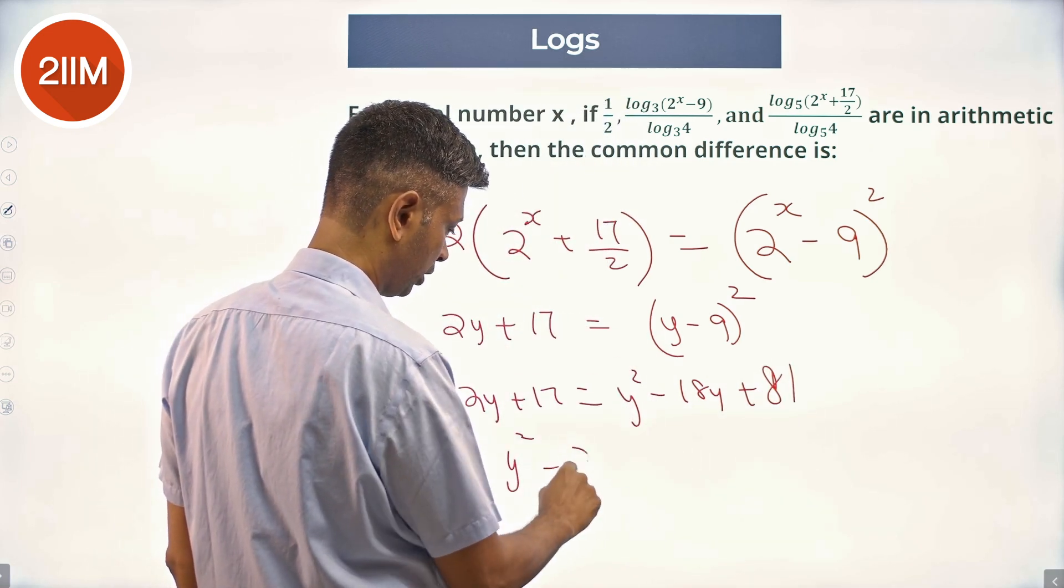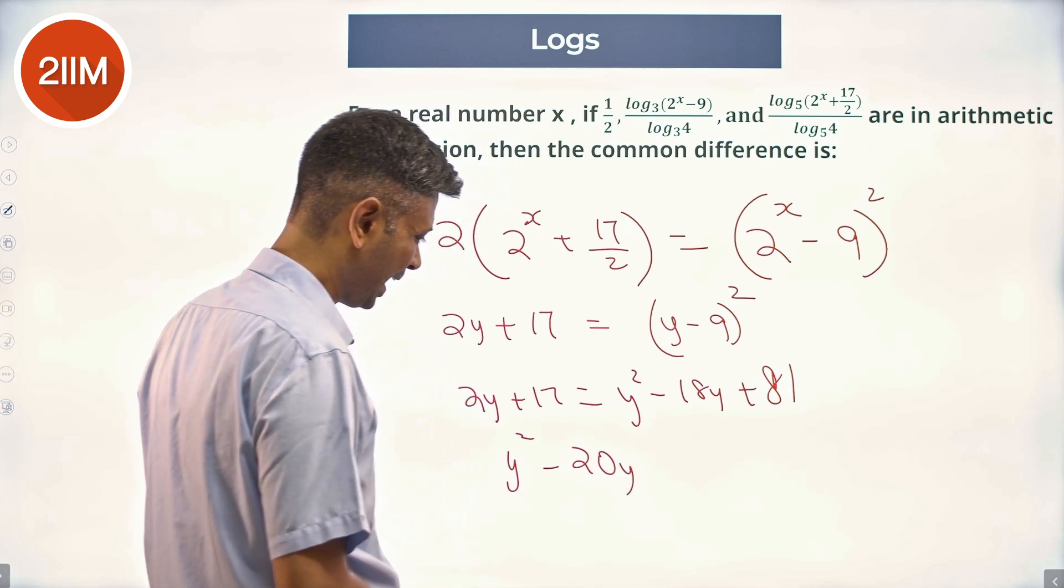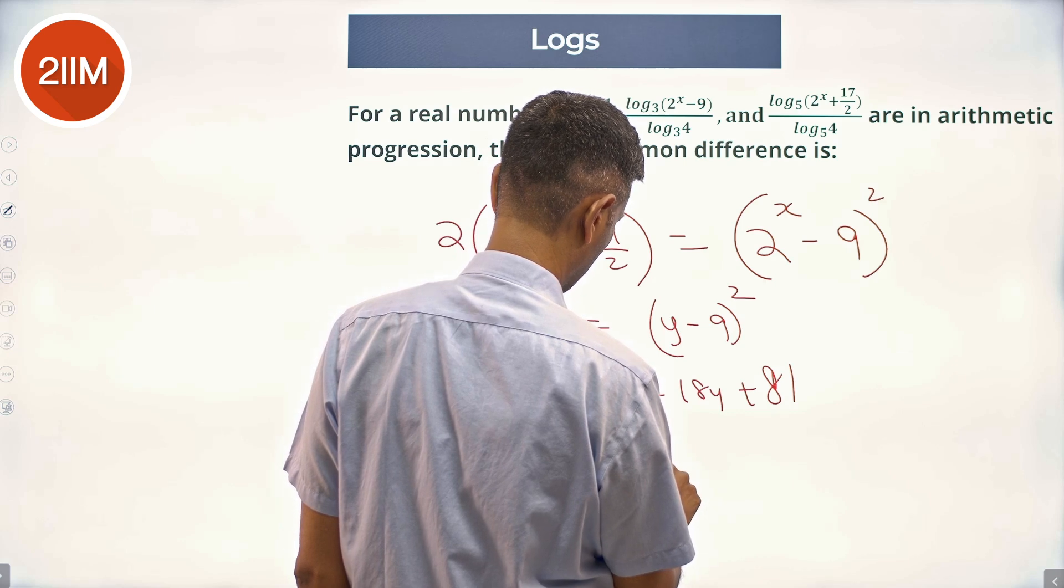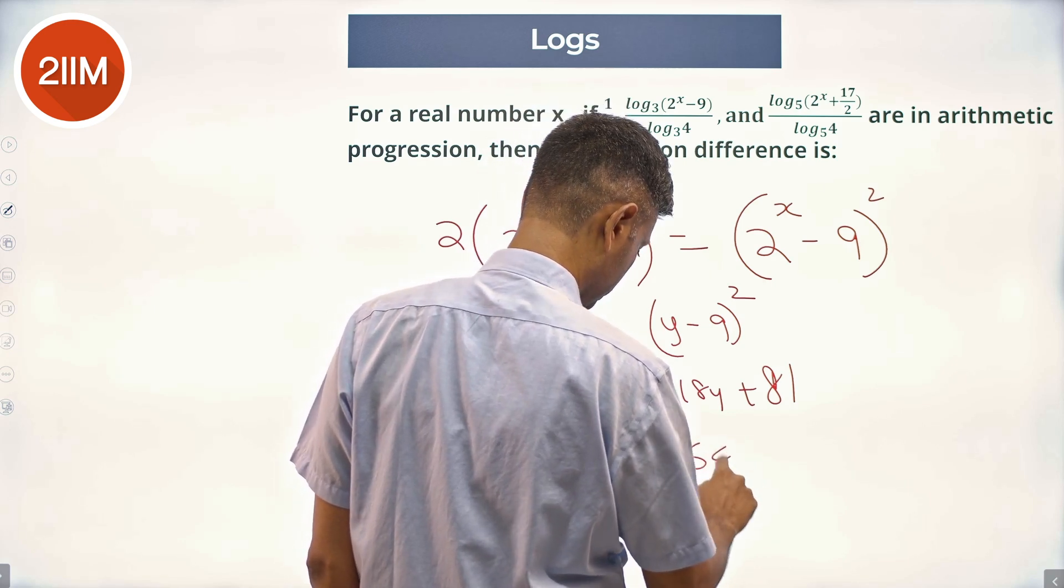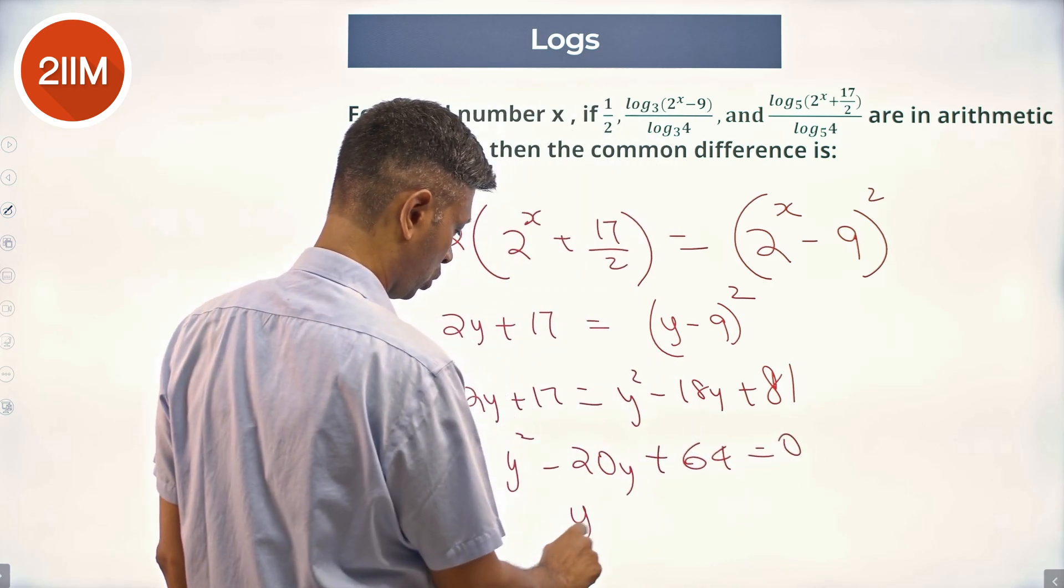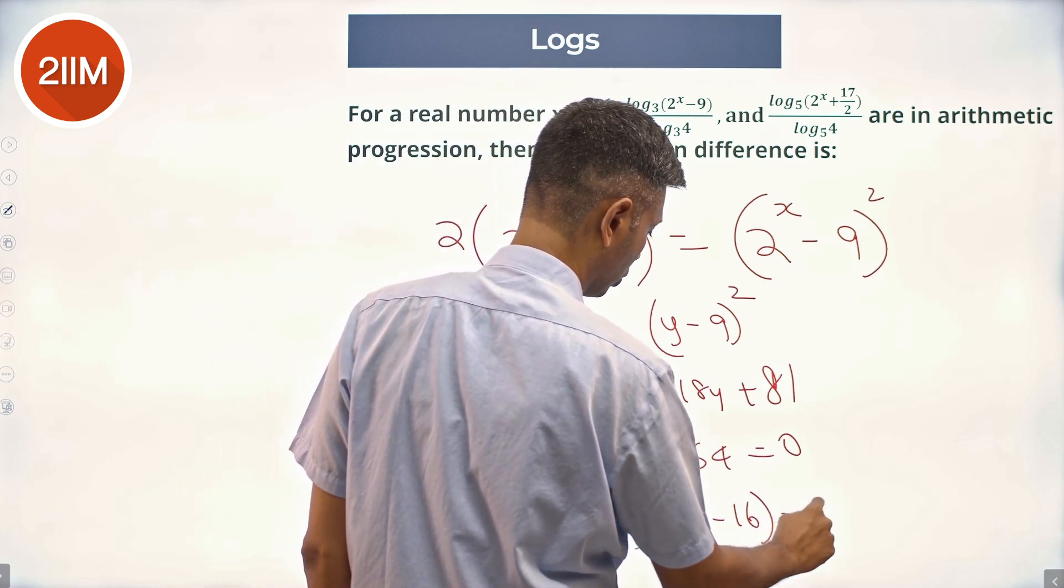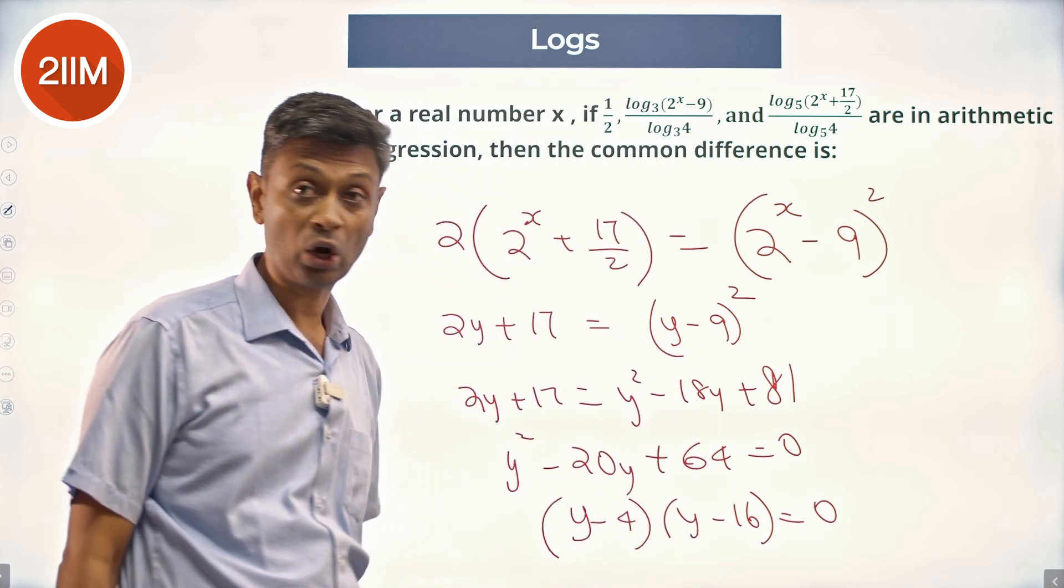So y² - 20y + 64 = 0. So this is (y - 4)(y - 16) = 0. y is 4 or 16.